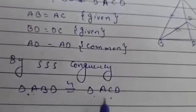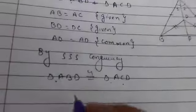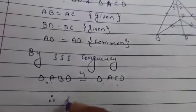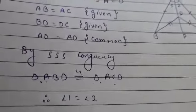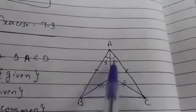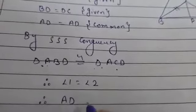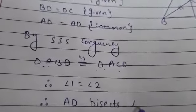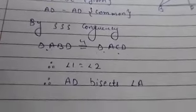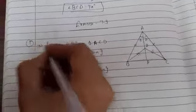If these triangles are congruent, then we can say that these two angles — angle 1 and angle 2 — will also be equal. So we can write: therefore, angle 1 equals angle 2. If angle 1 is equal to angle 2, then we can say that AD bisects angle A. So we can write: therefore, AD bisects angle A. This was the first part which we have proved.